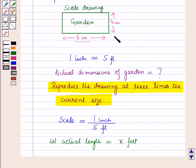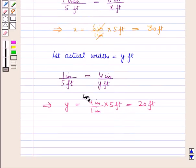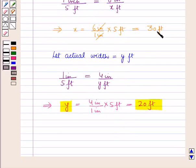Now let us find the actual width of the garden. The width in the scale drawing is 4 inches. Let the actual width be y feet. Again from the scale factor, y equals 20 feet. So the actual length of the garden is 30 feet and the actual width is 20 feet.